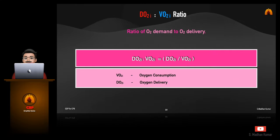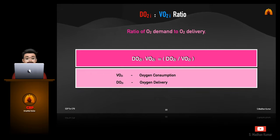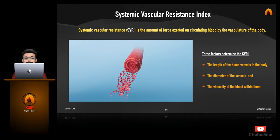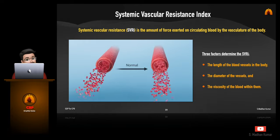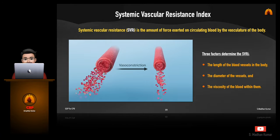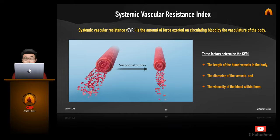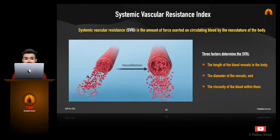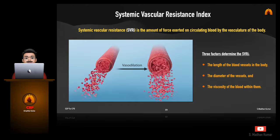DO2 to VO2 ratio is the ratio of oxygen demand to oxygen delivery. Even though SVRI is not calculated during bypass widely, it is a must for us to calculate to avoid using vasoconstrictors, which can deplete the microcirculation.